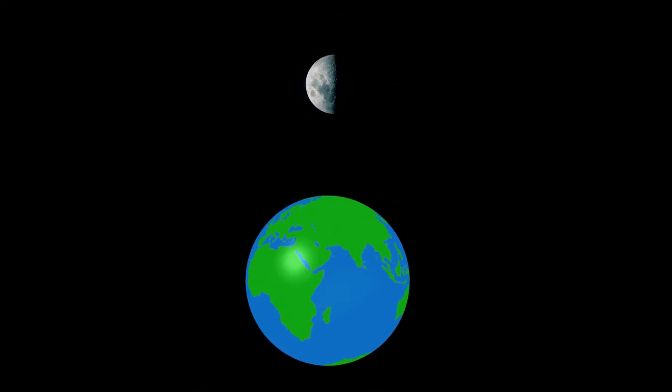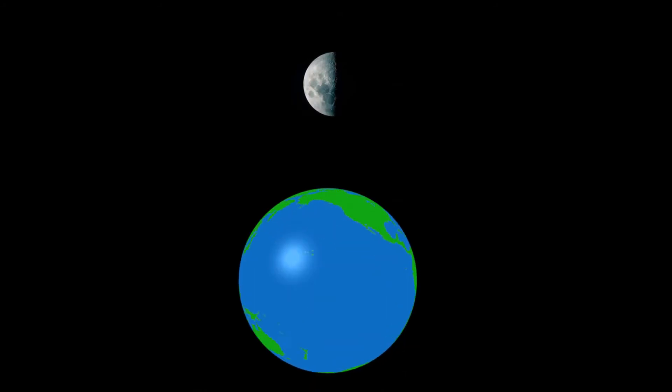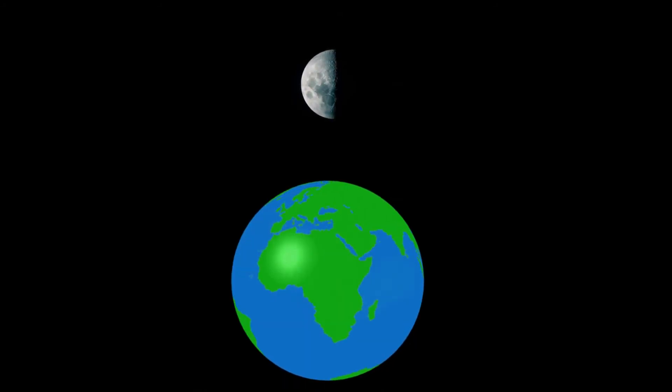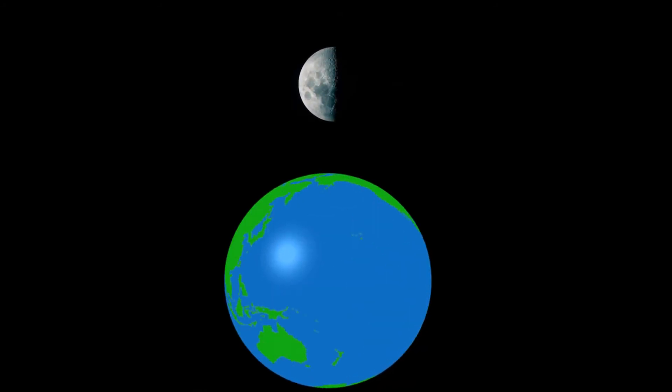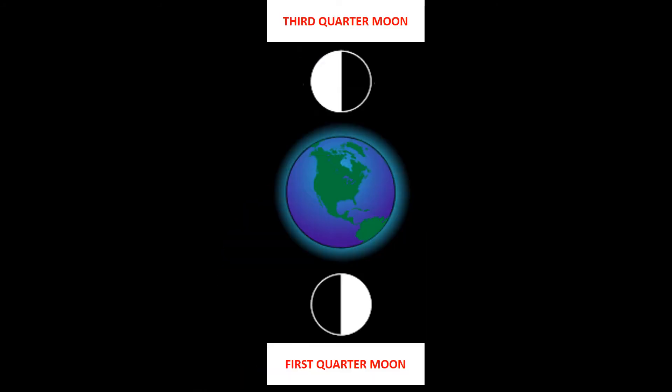Third Quarter Moon is when half of the lit portion of the Moon is visible. In this phase, the opposite half of the Moon is illuminated compared to the First Quarter Moon.